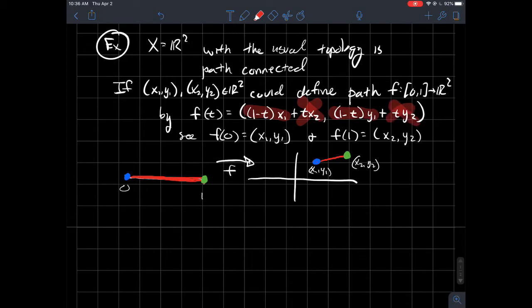So in other words, f(0) is my first point, (x1, y1). And similarly, when you plug in t equals 1, that knocks this out, and you're just left with x2.